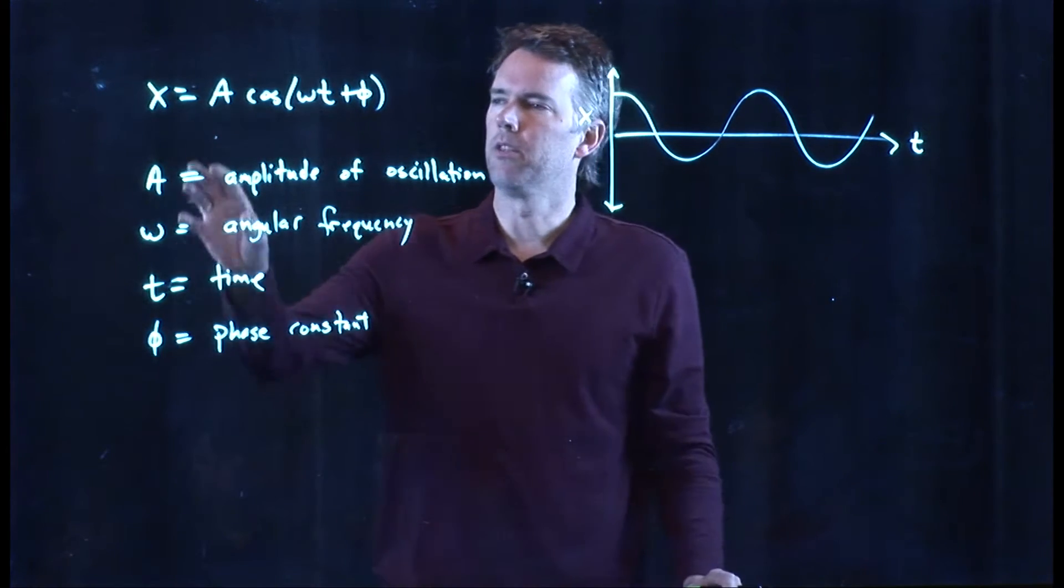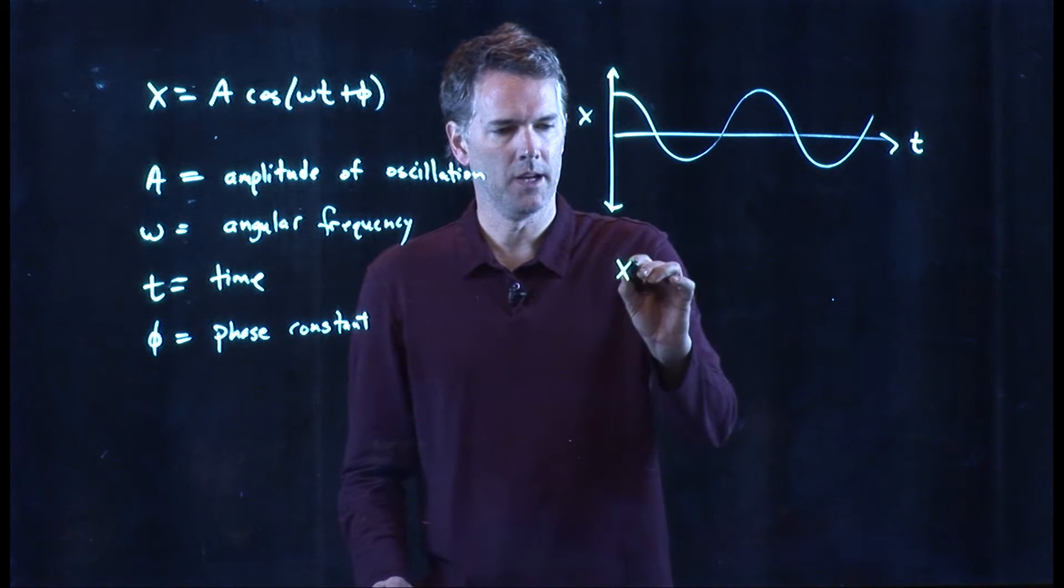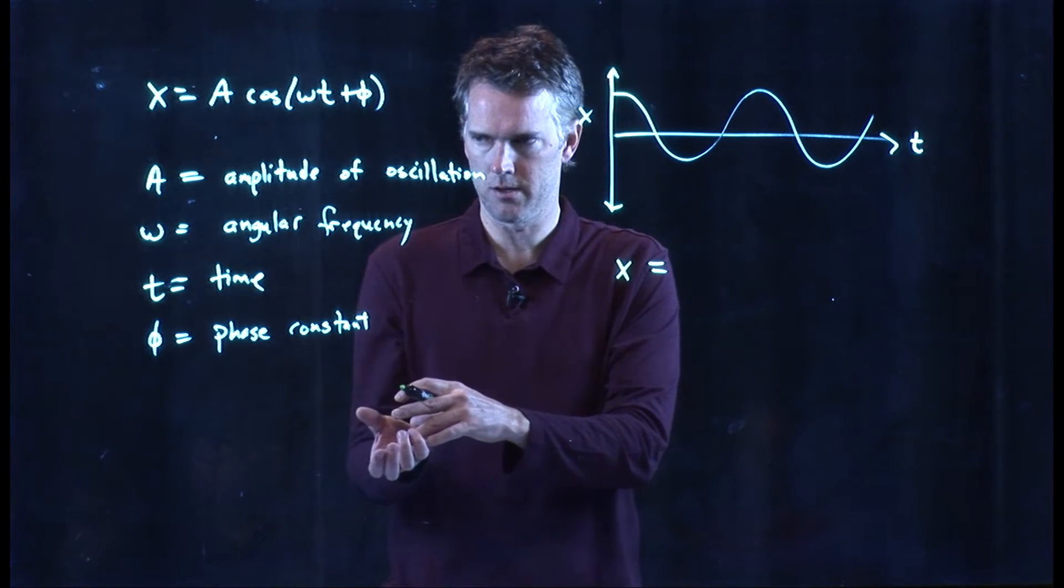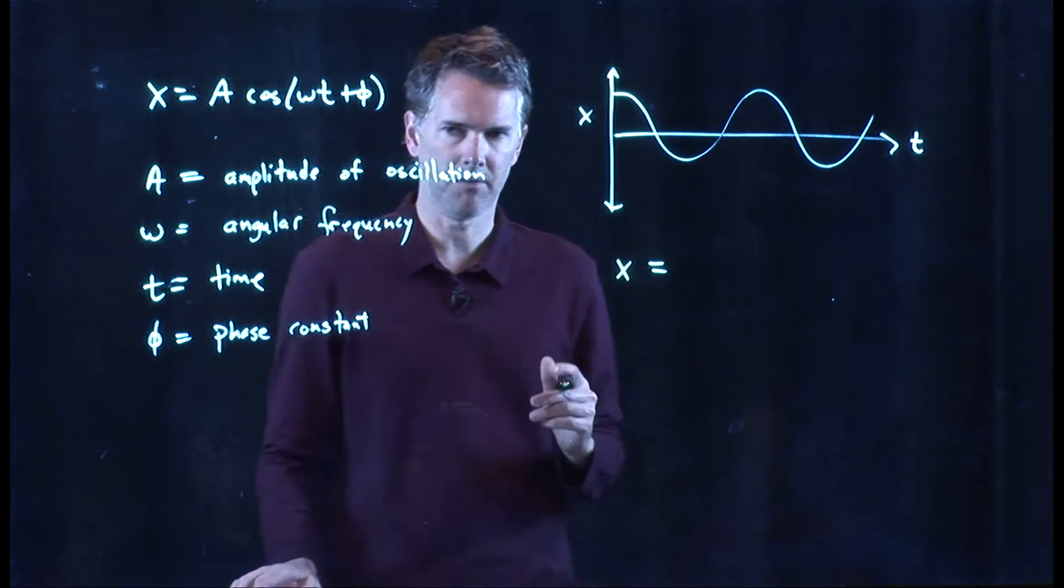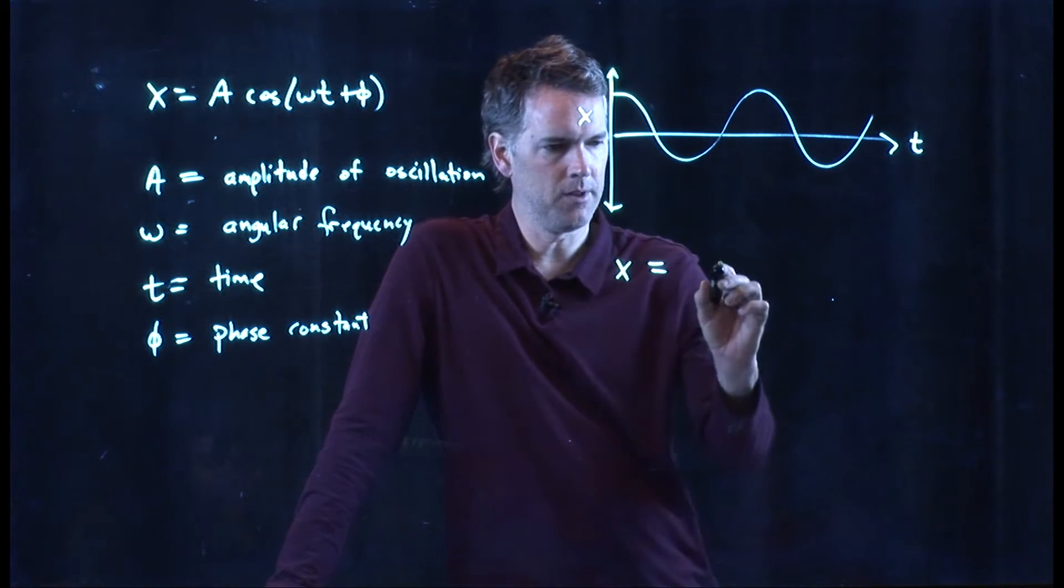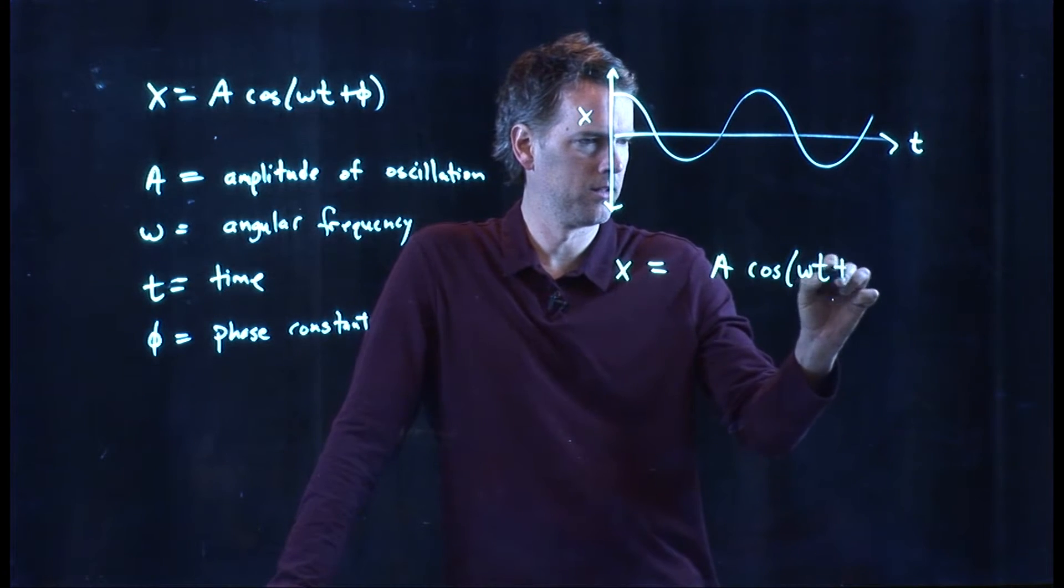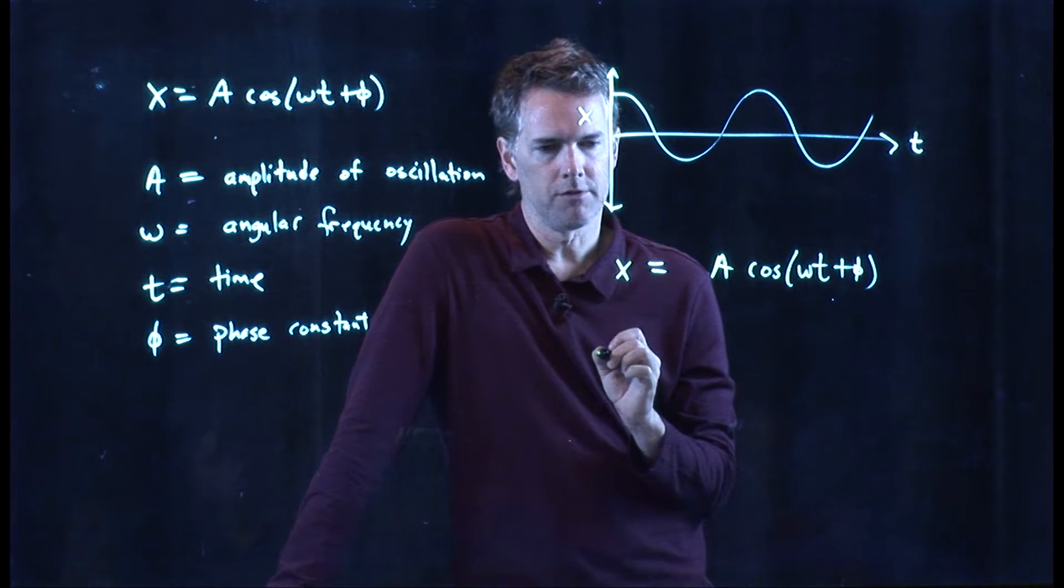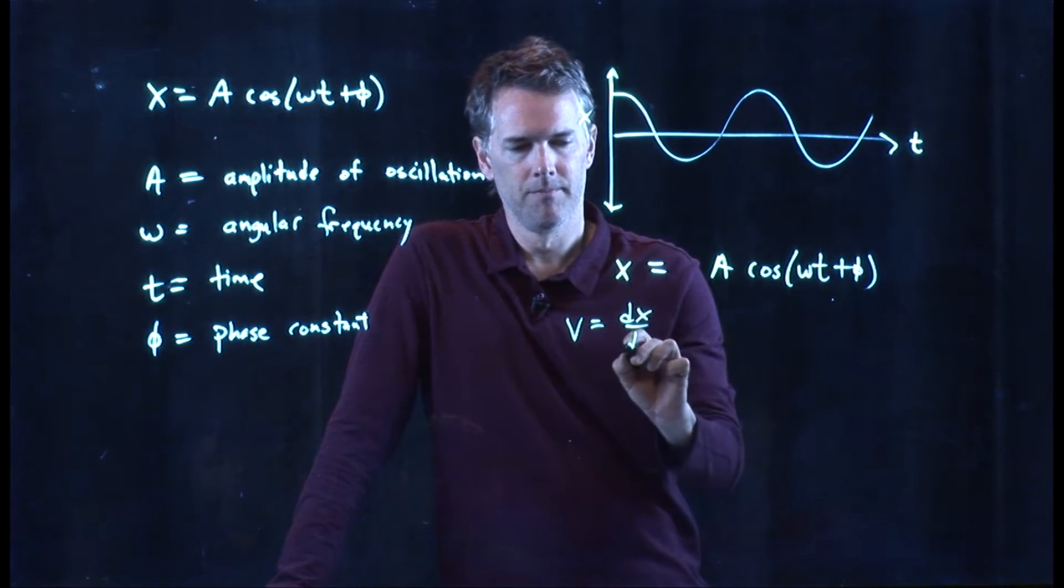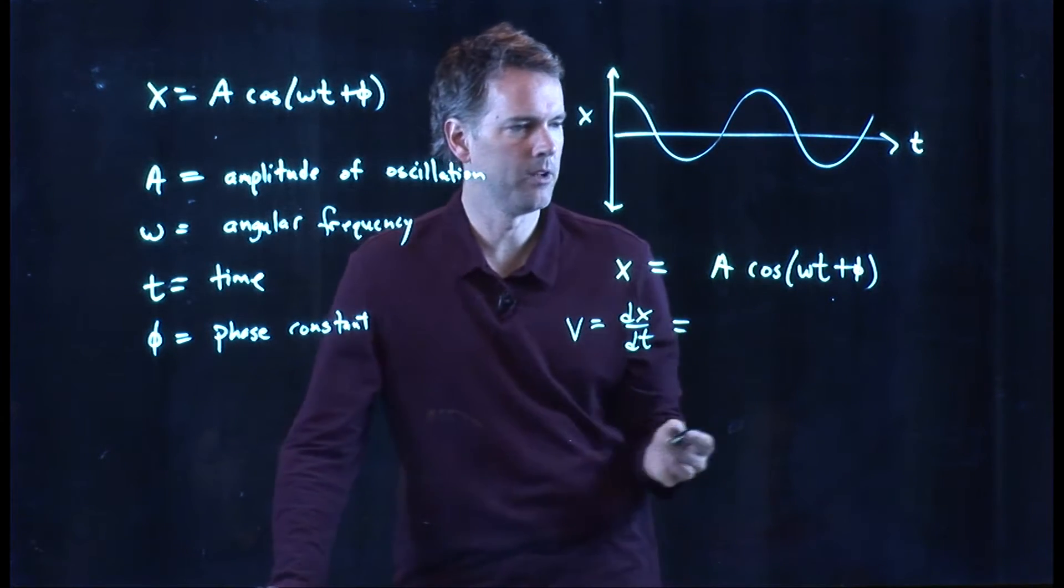So anytime you're dealing with differential equations, one thing that you need to do is put the solution back into the differential equation to solve for some of these constants. And let's do that. We're going to try to solve for this omega. To do that, we have to figure out what the derivatives look like. So here's our function x. But we're going to need the first derivative, which is, of course, v.